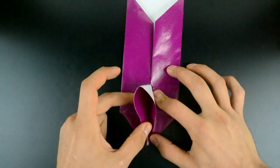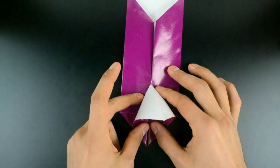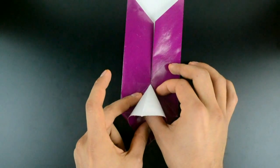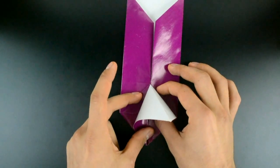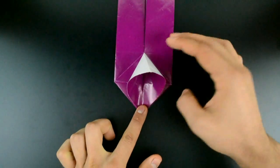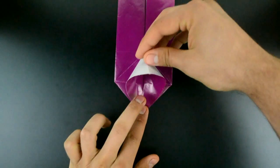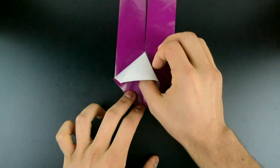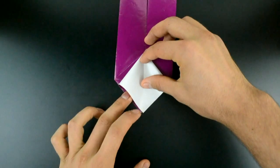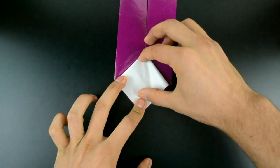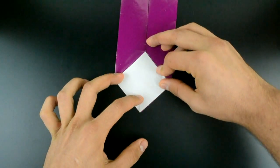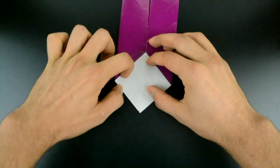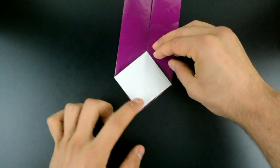Open a little the bottom of this middle flap. And flatten the same flap. Giving the shape of a square. Like this. Okay.